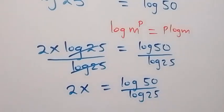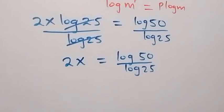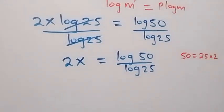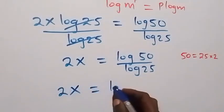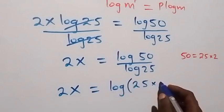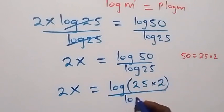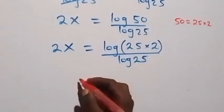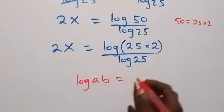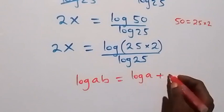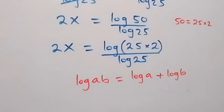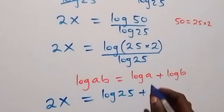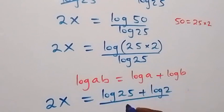We can simplify further and express 50 as 25 times 2. So we write this as 2x equals to log of 25 times 2, over log 25. Then we apply the law of logarithms: log a times b can be separated as log a plus log b.